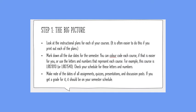To start your semester schedule, step back and look at the big picture. Look at the instructional plans for each of your courses and mark down all the due dates for the semester — if it's worth a grade, put it on your semester schedule. You can color code the courses, but make sure you also include the course code. Be careful to note not only the course code, which is four letters and four numbers, but also your section number, as it will differ depending on the course you are in.